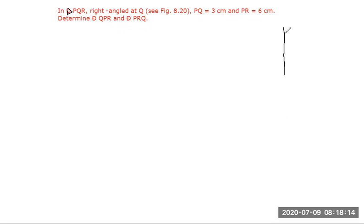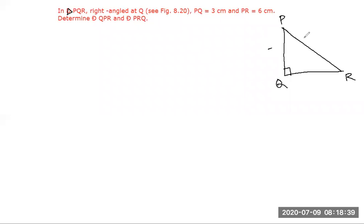Now let's do this sum. Triangle PQR with right angle at Q — so angle Q is 90 degrees. PQ is 3 and PR (the hypotenuse) is 6. Find angle QPR and angle PRQ. Let's call angle QPR as theta. Then the opposite side is PQ = 3 and the hypotenuse is PR = 6. Once we find one angle, the other is 90 minus that angle since the two angles are complementary.